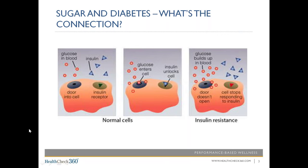The insulin acts like a key to unlock the cell and allow the sugar in the blood into the cell. Those two photos on the left show what is supposed to happen — that's a normal cell. What can happen when we consume too much sugar and too many simple carbohydrates is insulin resistance. When we're consuming too much sugar, our pancreas might not be able to keep up and may not produce enough insulin, or our cells may stop responding to it. The glucose then stays in the bloodstream rather than getting into the cell, and that is when type 2 diabetes can develop.